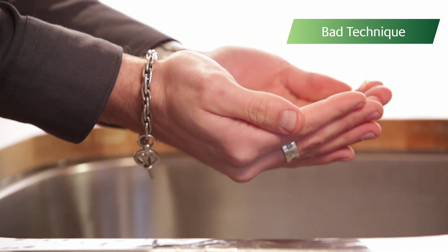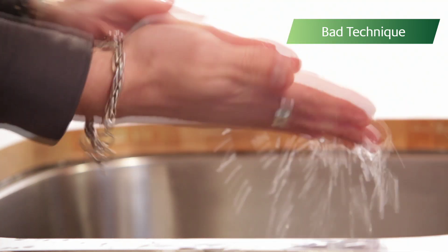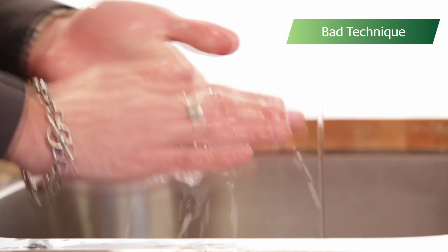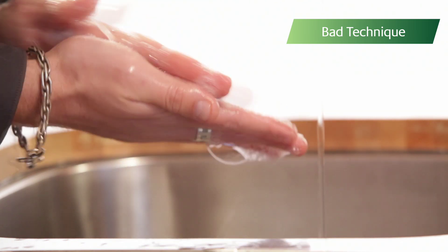Well, he should have removed his jewelry and watch before washing, as these can be a hiding place for germs. He should also have rolled up his sleeves, and he did not wet his hands with warm running water first before applying the soap.